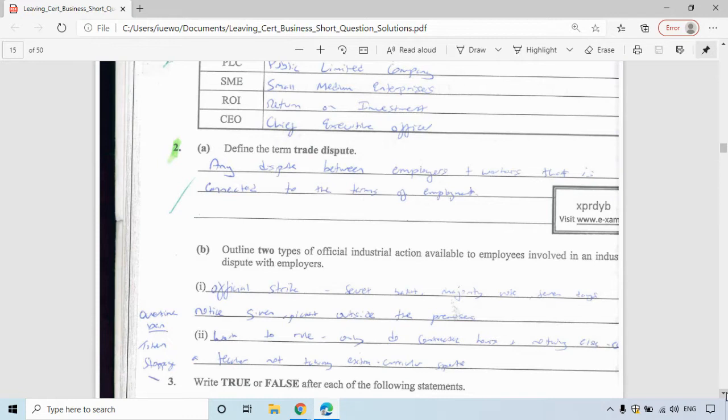Two types of official industrial action available to employees involved in an industrial dispute with employers: an official strike is when you have your secret ballot and there's a majority vote. You have to give seven days notice and you can then picket outside the premises, so primary picket outside your premises if it's connected to your employer, or you can secondary picket if another business is involved in the industrial dispute with your original employer.